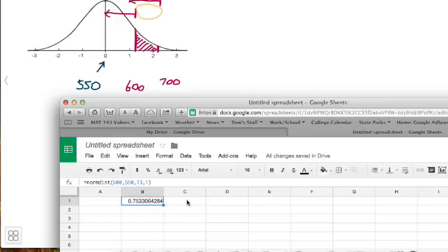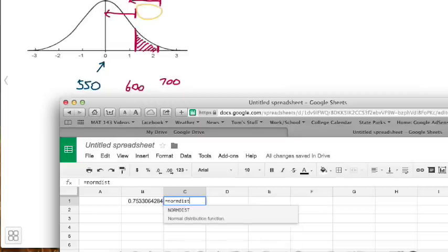This one was 600 so we need to do 700. So over here equals norm dist 700, mean of 550, standard deviation of 73 and to the left, the one.